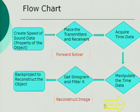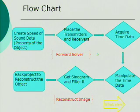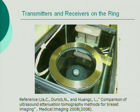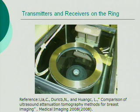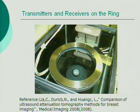After we have the speed of sound data, we can place the transmitter and receivers in order to acquire time data. This is a real experimental setup. On the ring, there are 256 transmitter-receiver sites. Each transmitter transmits a sound wave to all the receivers, and the receiver acquires time data for the path that the sound wave propagates through. The object is in the middle of the ring.